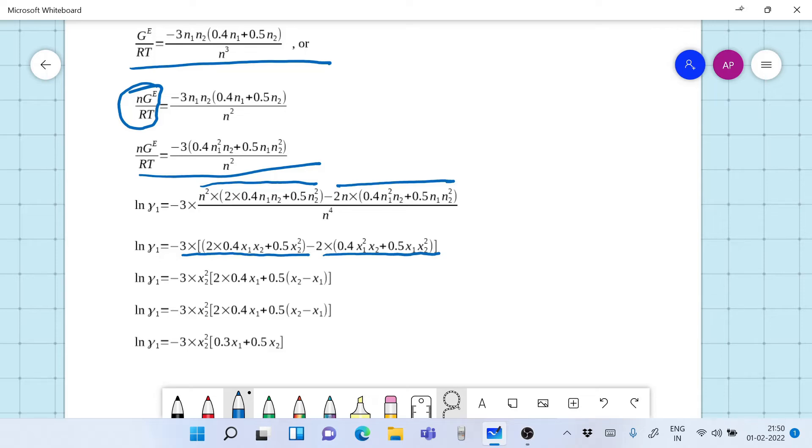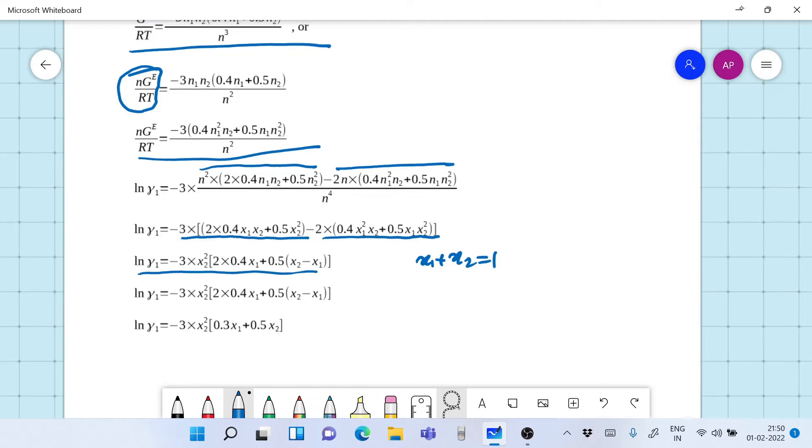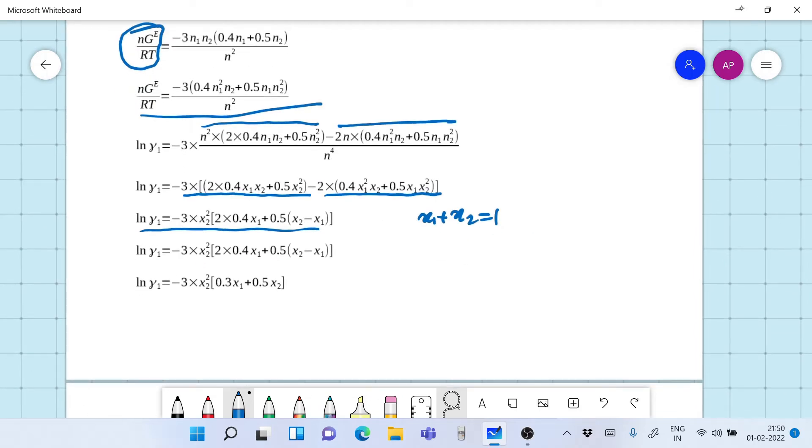Afterwards writing n1 by n as x1 and n2 by n as x2 we get the following expression. Now simplifying this expression and always using x1 plus x2 is equal to 1. Wherever you get an opportunity use this equation x1 plus x2 is equal to 1. And simplifying this entire expression you get this expression finally.